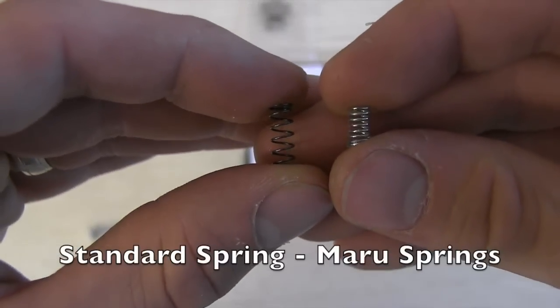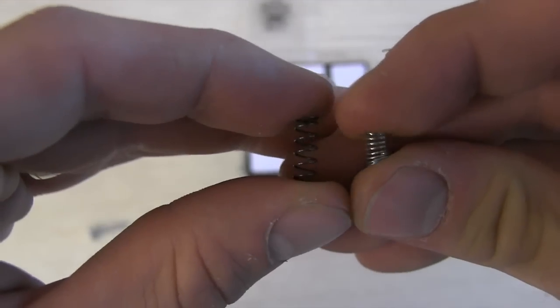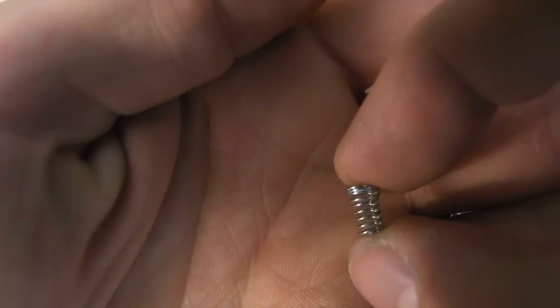So the Maru springs are way different from the standard springs. They're about half the size. Now once the screw is tightened often it doesn't mean much. The odd thing is that the spring is wider at one end. I'm assuming this has to do with the Maru cube itself.